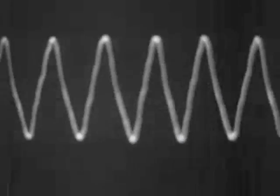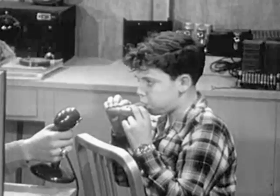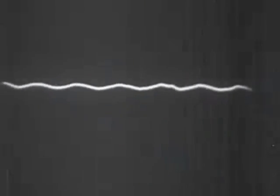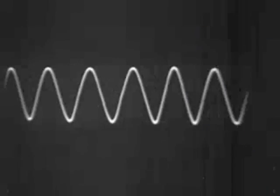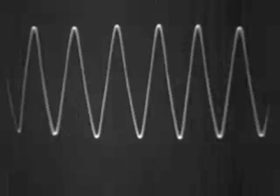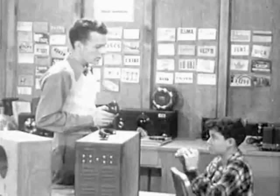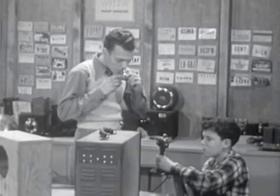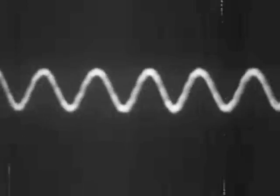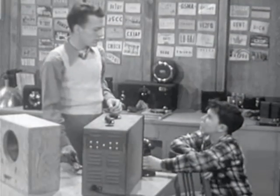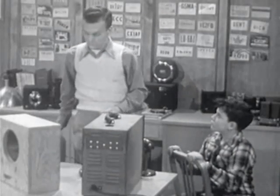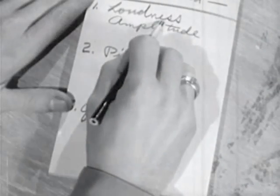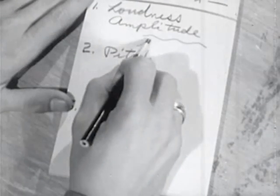Now louder. The louder I blow, the taller the lines get. That's right. The height, or amplitude, of the jumps changes according to the loudness or intensity of the sound. And another thing — watch how the sound falls off in intensity as I move away from the microphone. So you see, the loudness of any sound you hear varies with its intensity and its distance from you. This is shown by the amplitude of the jumps: shallow waves for a soft note and high waves for a loud note.